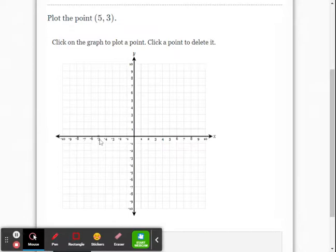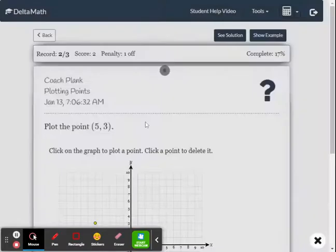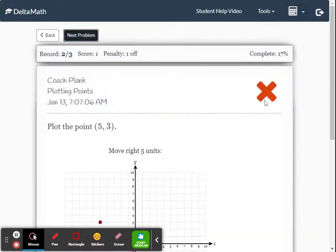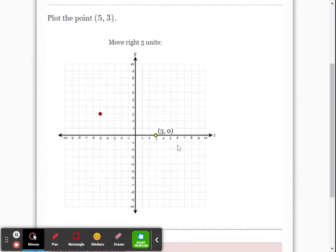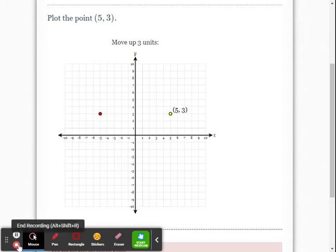And this time you go left five up three, which is a mistake. This is going to be wrong, but look what happens. You get the red X, but then it shows you and you go, oh yeah, I was supposed to go right five and up three. And that's all there is to it.